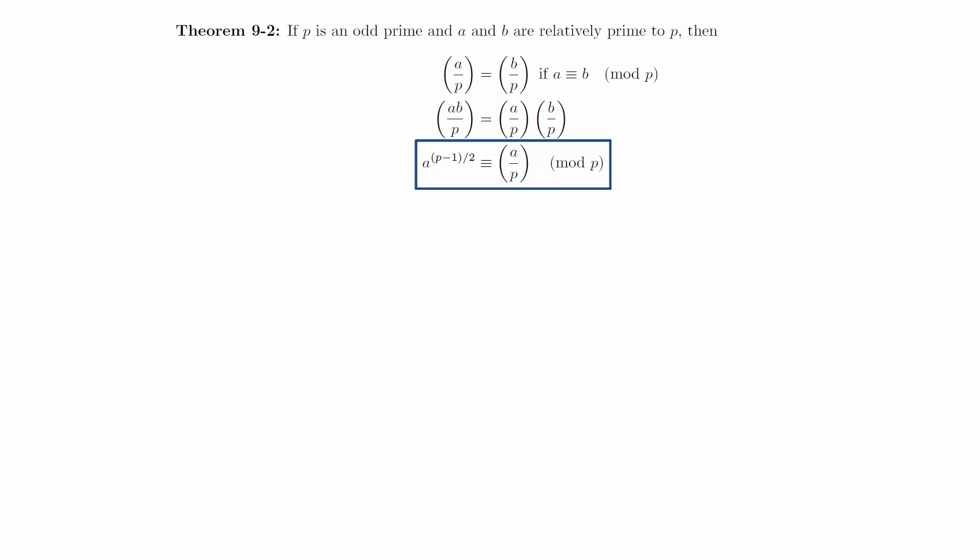For the third equation, we also need to look at cases. If p divides a, then the Legendre symbol is 0 by definition, and we can see that a to the p minus 1 over 2 is congruent to 0 mod p by direct calculation. Combining these two statements together proves the result.